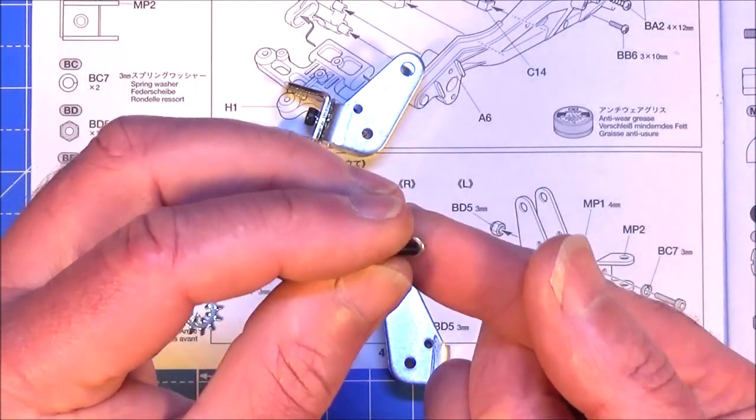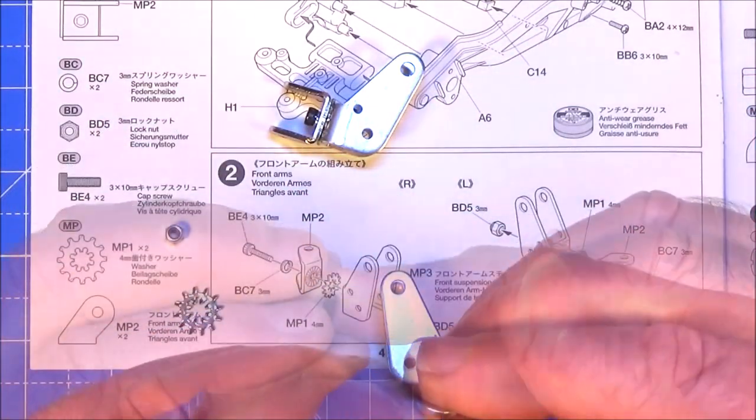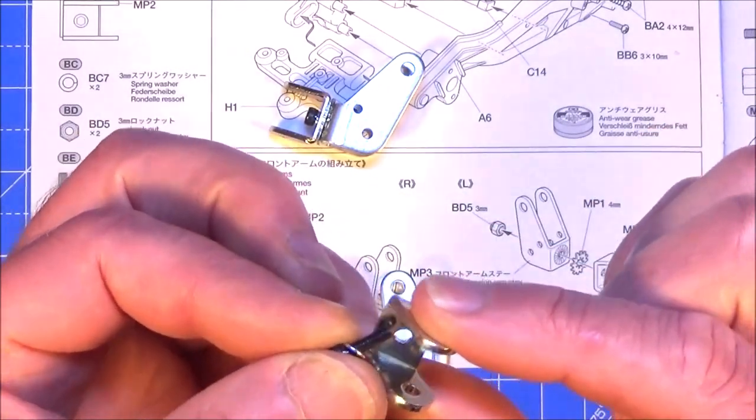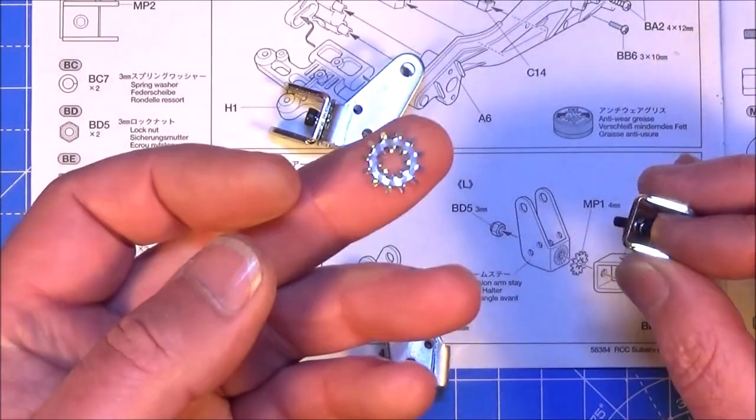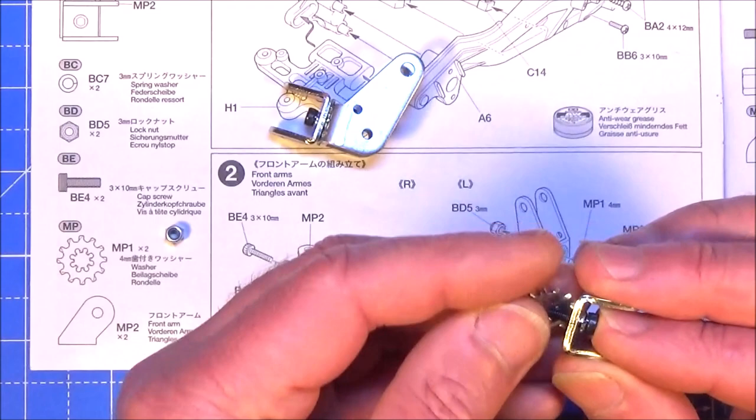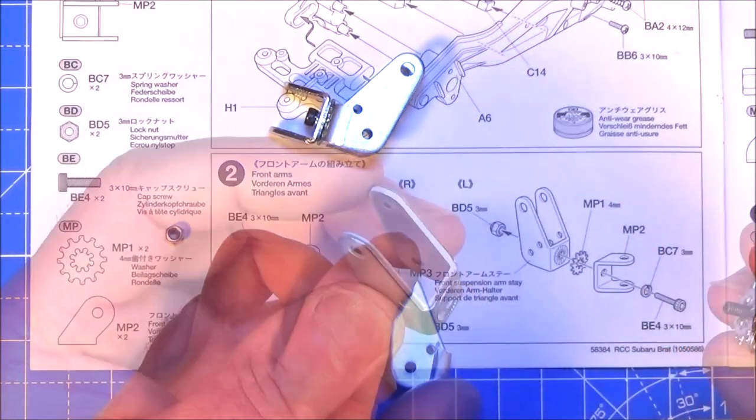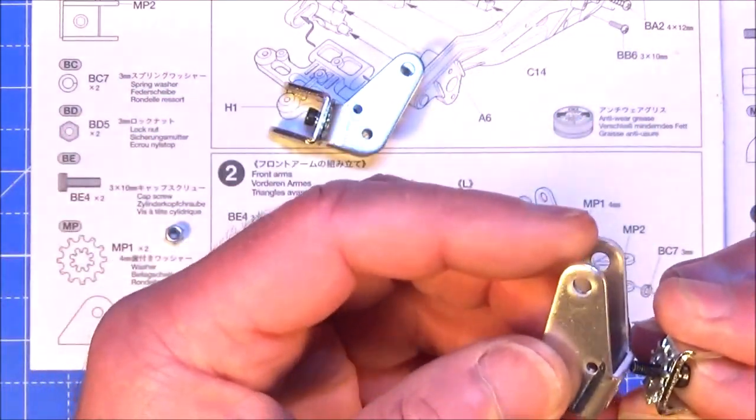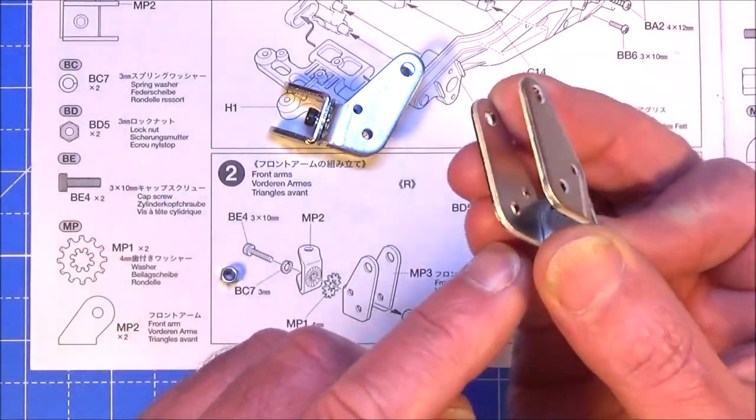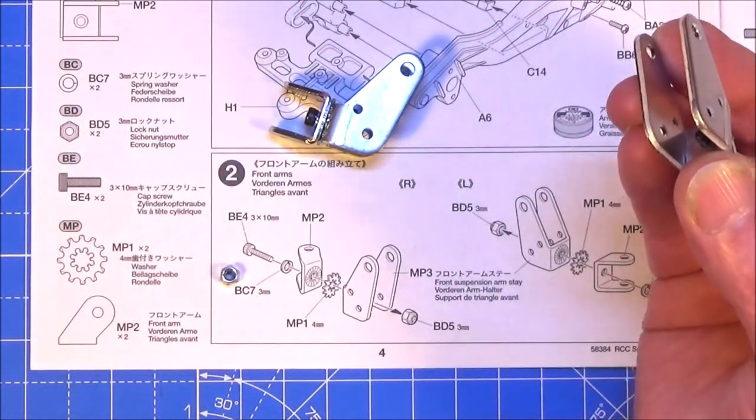So I'm going to get my bracket MP2. You've got your allen screw and a spring washer through that hole. Then you need the kind of starred washer. Goes on that. Then your MP3. And then we've got to get the lock nut onto there.